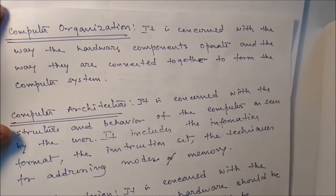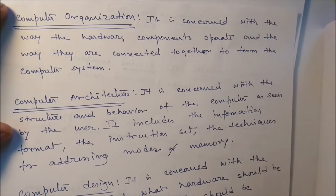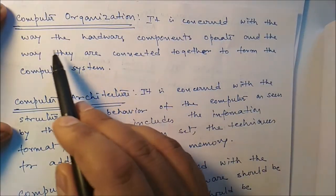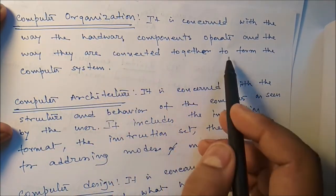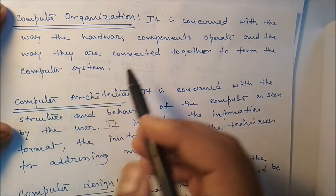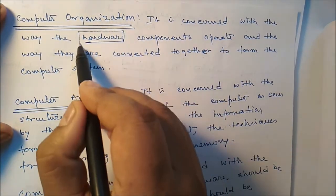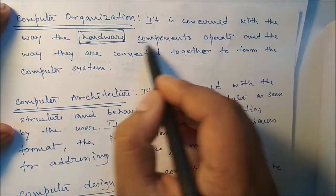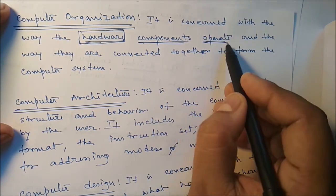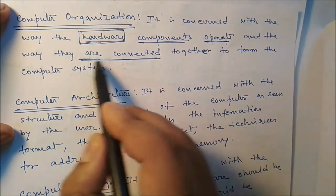Now we should know what is computer organization and what is computer architecture. Computer organization is concerned with the way hardware components operate and how they are connected together to form computer systems. In computer organization we deal with hardware components - how they operate and how they are connected. These two are important.